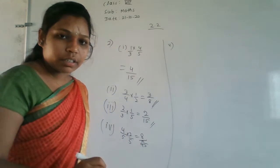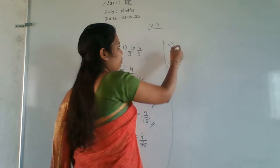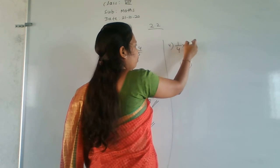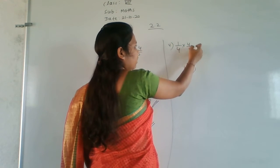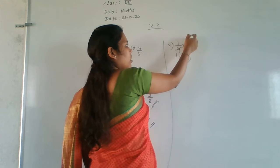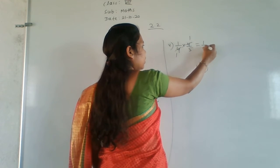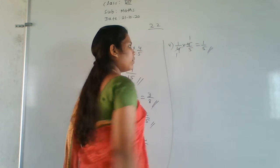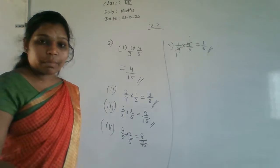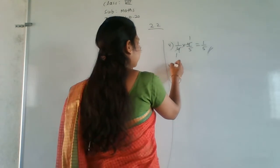Fifth question: 1/4 × 4/5. Here we can cancel the 4s — 4 ones are 4. After cancellation, the answer is 1/5.